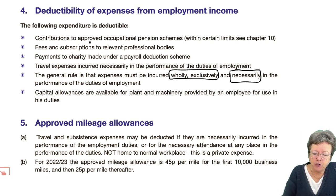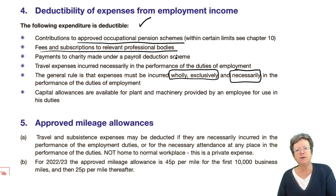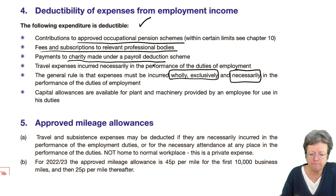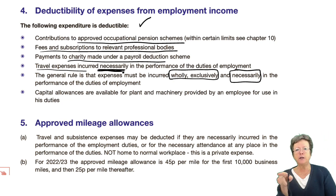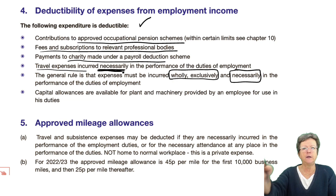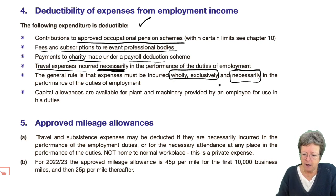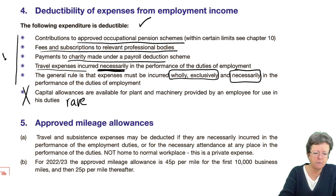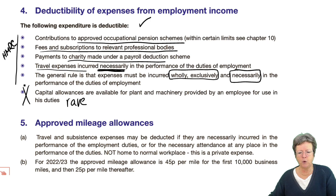Contributions to an approved occupational pension scheme are allowed. Fees and subscriptions to professional bodies — so your ACCA subscriptions, if you're paying those, are an allowable expense against income. Charity payroll deductions. Certain travel expenses — that word 'necessary' — in the performance of your duties. So not going to and from work, but while you're at work, if you're sent out to do something and you take your car, you can make a claim for that. But you can't claim home to the office. Capital allowances — that is seriously rare — and these have been agreed by HMRC as to what is and isn't allowed.